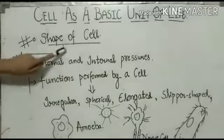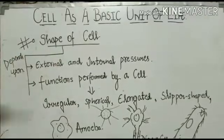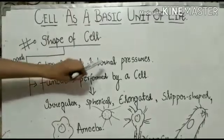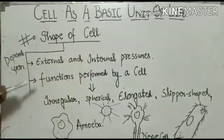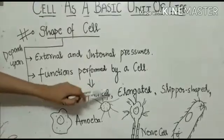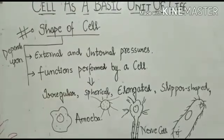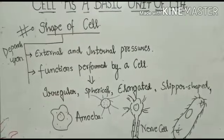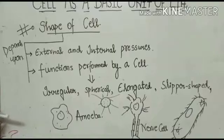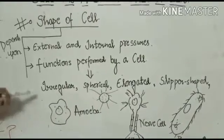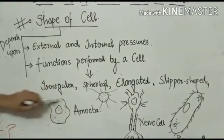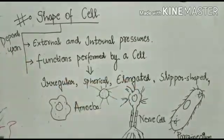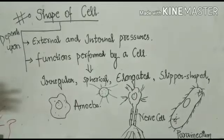Now come to the next topic, shape of the cell. The shape of the cell basically depends upon external and internal pressure of the body, and second on functions performed by a cell. Different shapes we get to see in the cell. There are some important shapes: irregular, spherical, elongated and slipper shape.